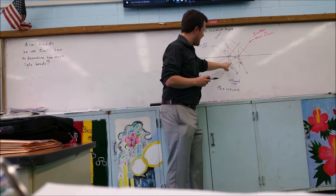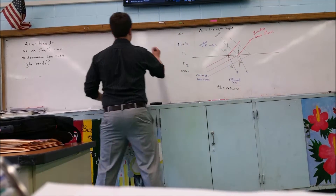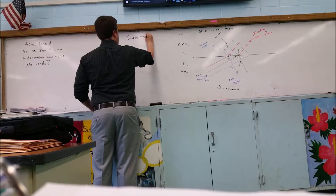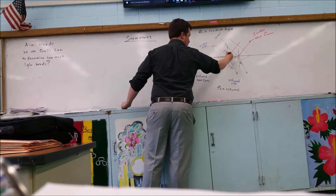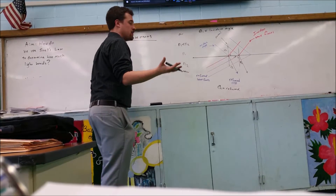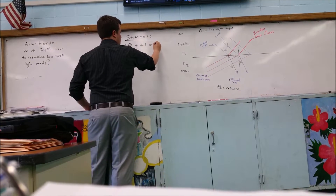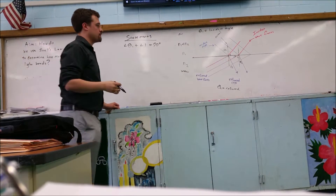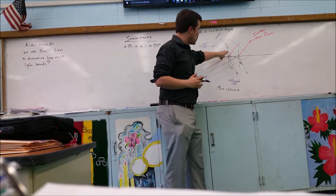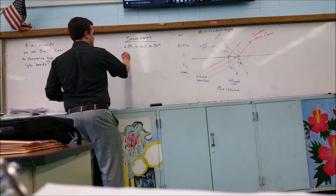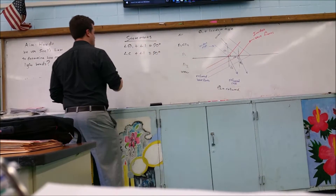Now we need to relate that angle to that angle — here's how we do it. Statement number one: from the geometry alone of this situation, theta 1 and angle 1 are perpendicular to the lines. Therefore, theta 1 plus angle 1 equals 90 degrees. Then, looking between angle C and angle 1, since the normal line is perpendicular to the surface, angle C plus angle 1 also equals 90 degrees. That's the first set of statements we're going to use.